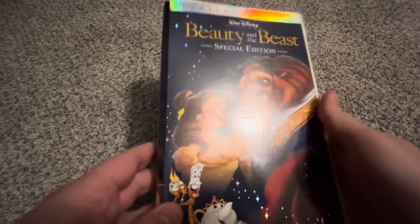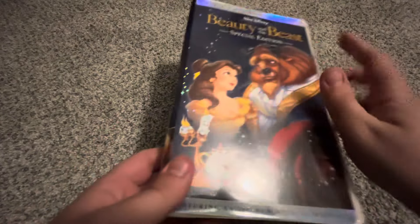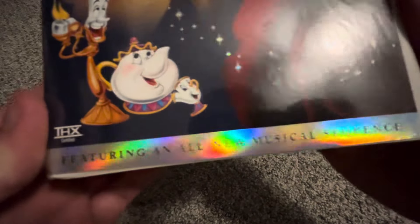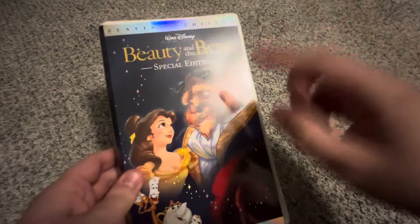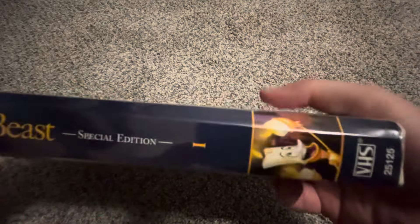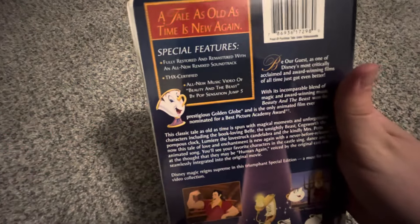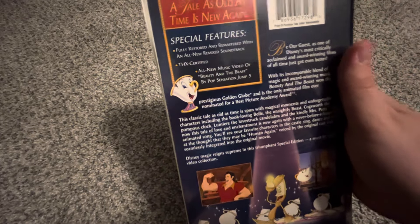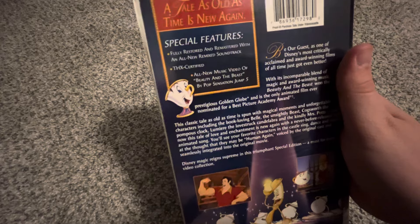And then we have the one that's in the black clamshell. That's the deluxe edition. Also has the Pinocchio trailer before the film begins. Actually, just check the opening of this tape. And this tape has a vertical sticker label. It was printed September 3, 1992.